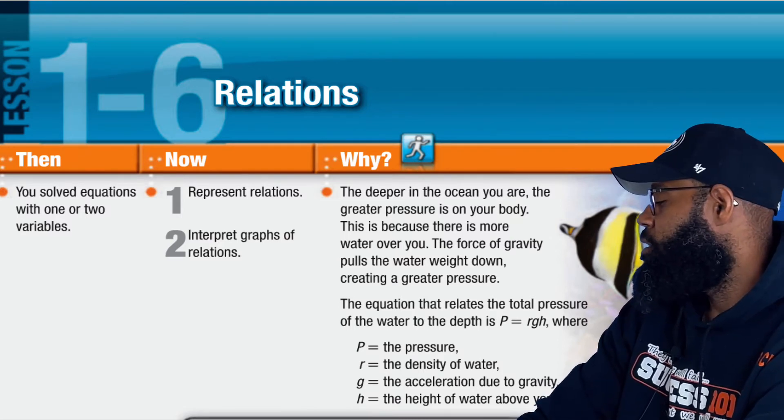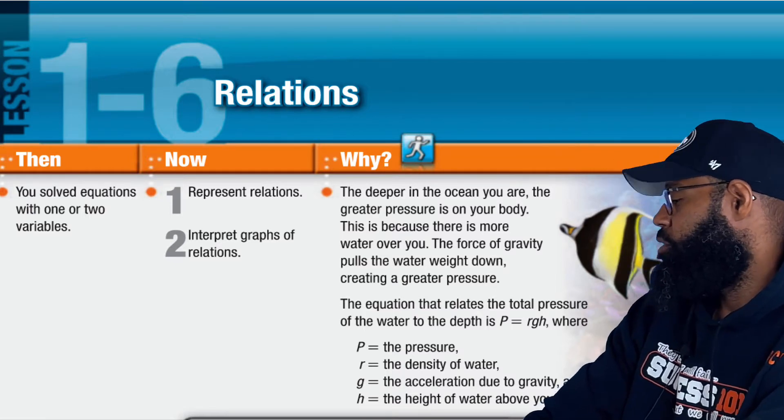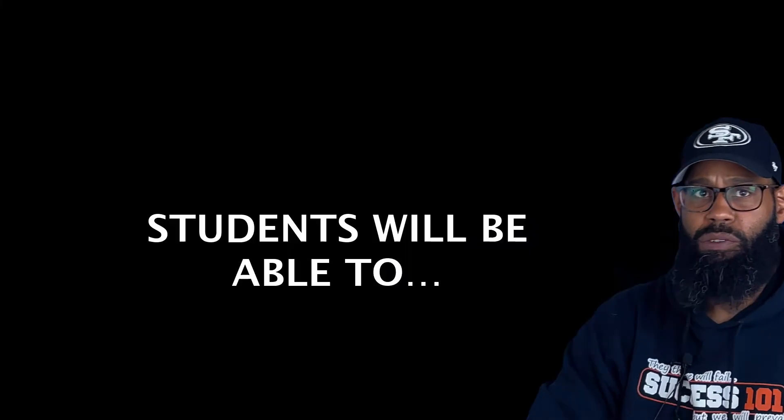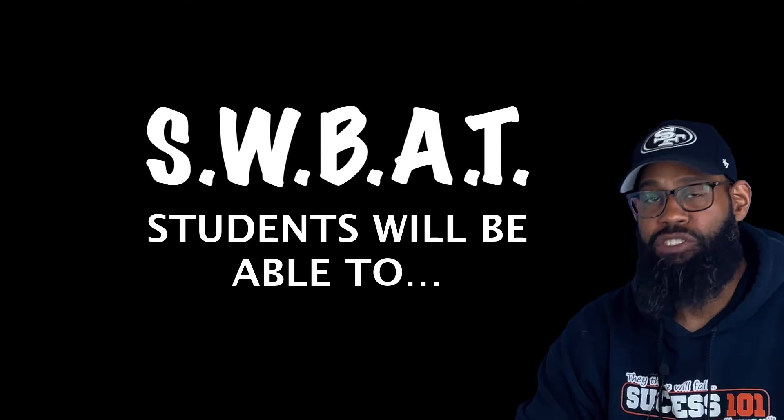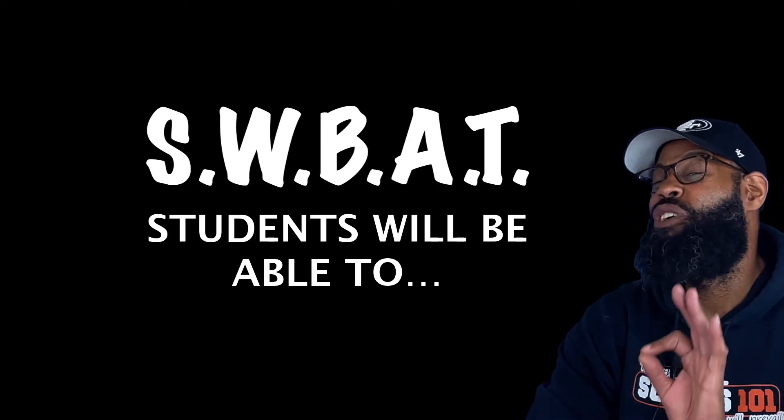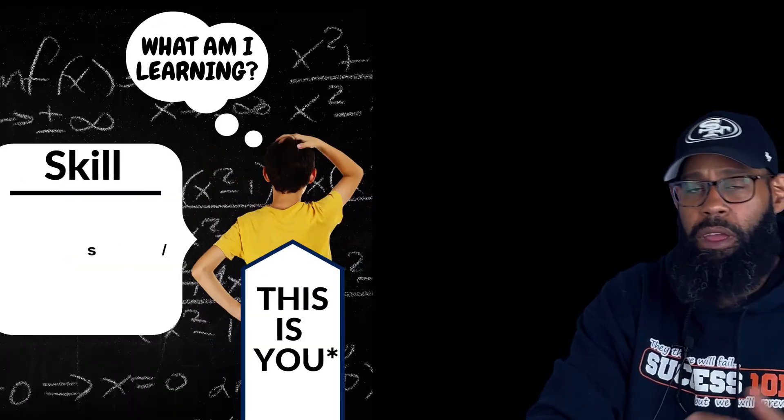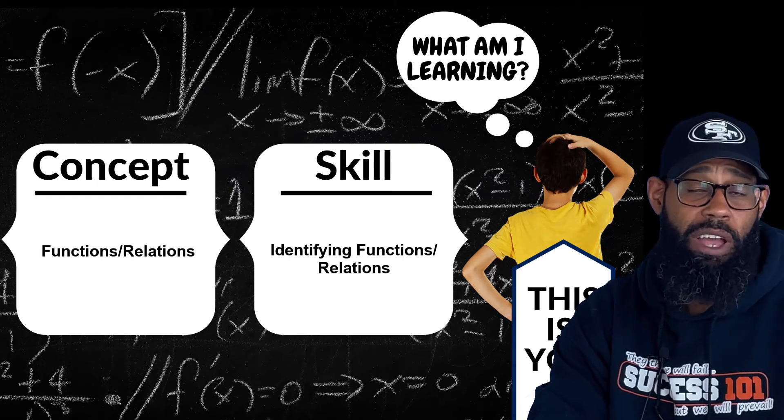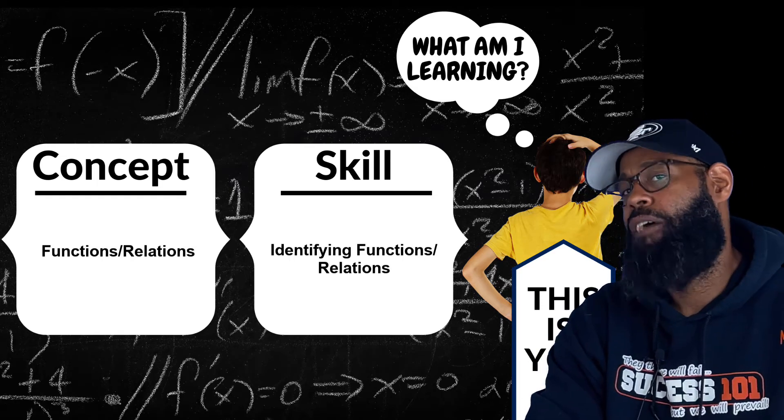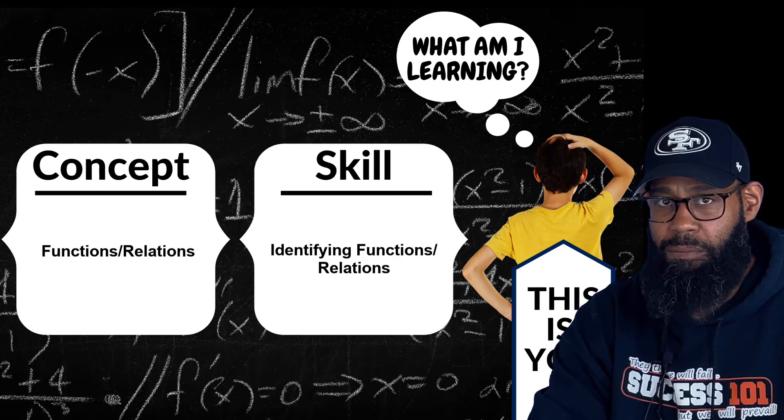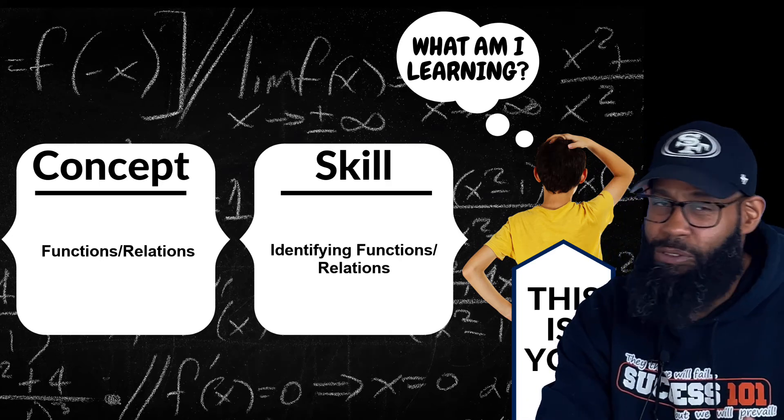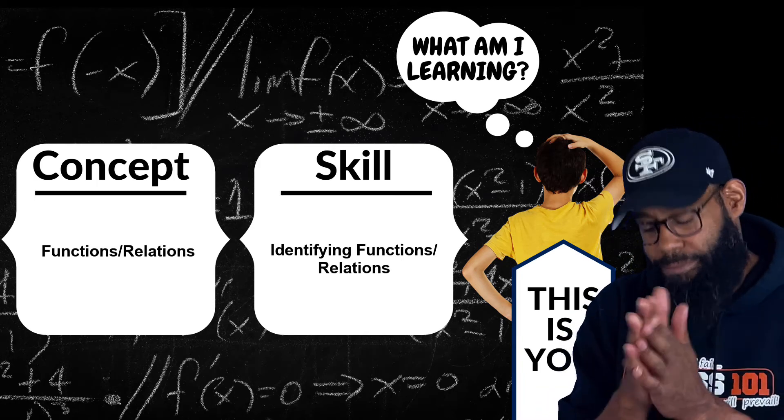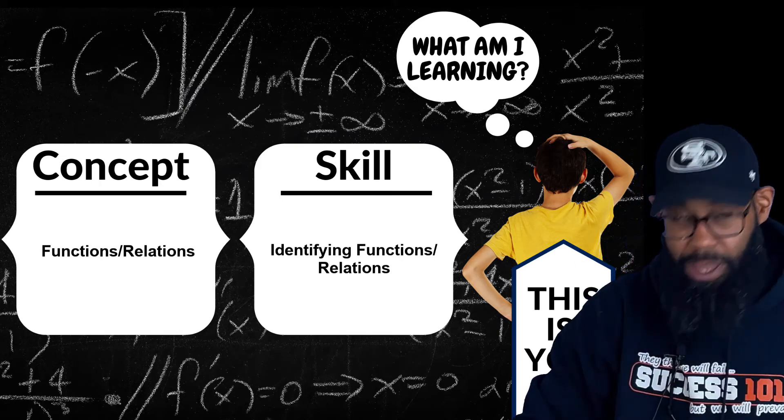But it also introduces us to some new things, and this is something new. If you have not had the discussion about functions, welcome to the discussion. Chapter 1, Lesson 6. What are you going to learn? To represent relations and interpret graphs of relations. Students will be able to interpret relations, and those relations come from a function. The skill is identifying. The reason it's going to be a short video is because there's not a lot of math going on here. Concept: functions and relations. Skill: identifying. That's it. Let's get this bad boy started.